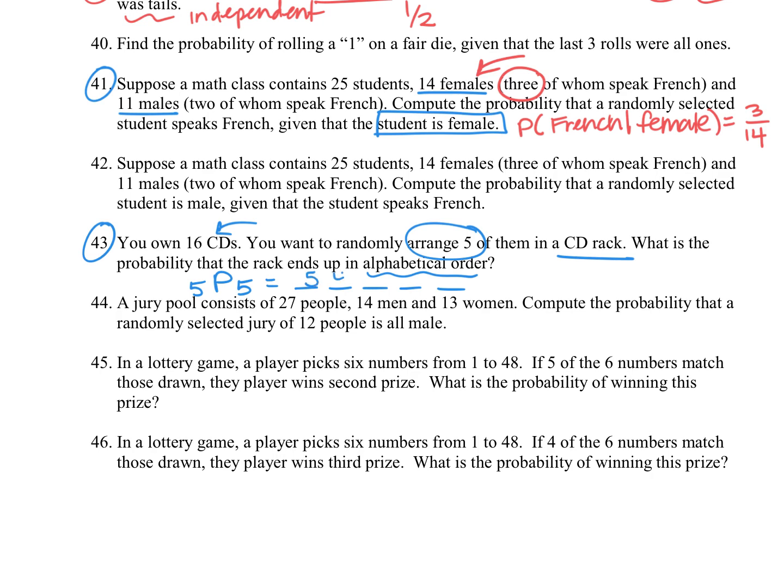There's five ways to choose the first one, then four, then three, then two, then one. And we multiply that. But really that's the permutation 5P5. So we multiply that out. We are going to get really 120. And so then being in alphabetical order, that's only one of those ways. So we'll have one out of 120 would be the probability that those five would end up in alphabetical order.